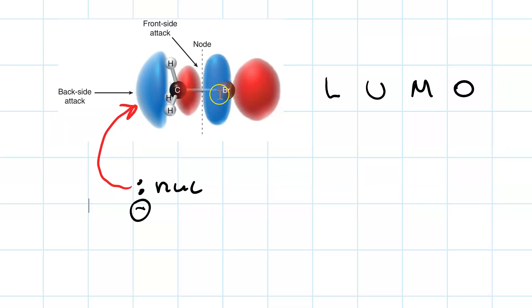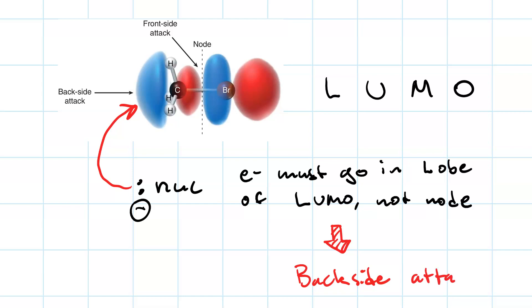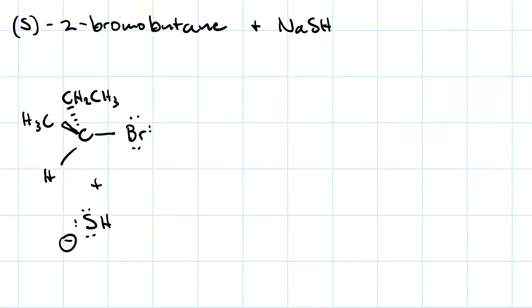Our nucleophile electron density has to go into this backside lobe to form a bond with the carbon. And then the carbon-halide bond can break. This requirement means that we are limited to backside attack. Backside attack is what gives us inversion of configuration.